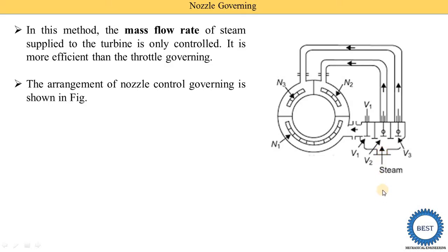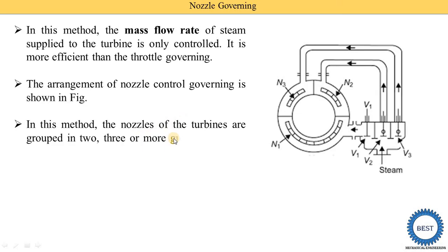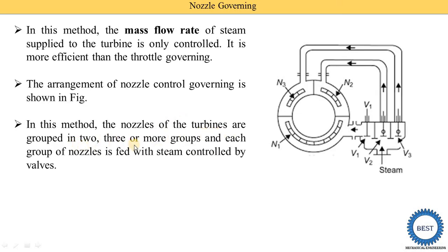Here you see the steam inlet is coming. This part is connected with the boiler — total steam comes here and is divided into three parts. When the full load is on, all three valves are open and the full steam is supplied to the turbine. But when the load is less than or greater than the design value, we can close or open a few of the valves. The nozzles of the turbine are grouped into two, three, or more groups, and each group is fitted with steam controlled by valves.